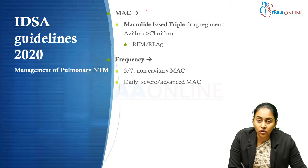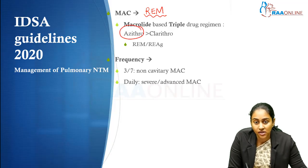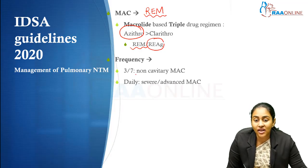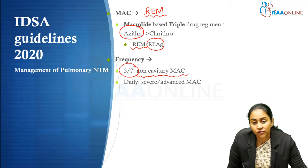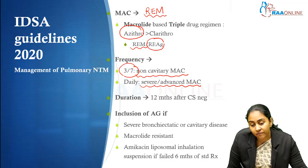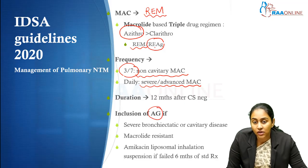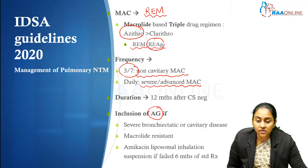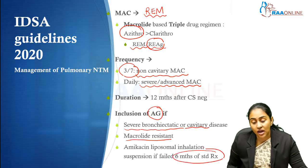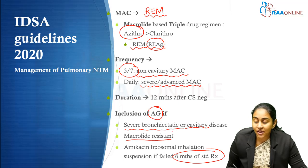For MAC, the drug of choice is REM — macrolide-based triple drug regimen, with azithromycin preferred. If you cannot use REM, then you will use RE and aminoglycoside. Those with less severe pulmonary MAC with non-cavitary disease can be treated with thrice-a-week therapy. Those with more severe or advanced disease, including cavitary MAC, require daily treatment with REM. Aminoglycosides are used only when patients have severe bronchiectatic or cavitary disease, when macrolide resistant, or when they have failed at least six months of standard therapy.